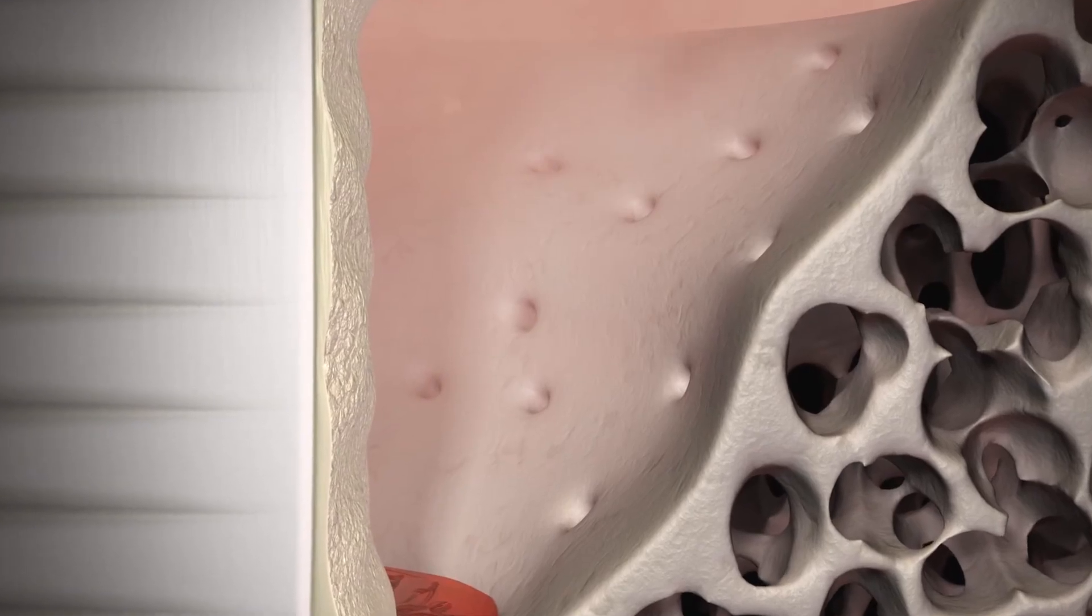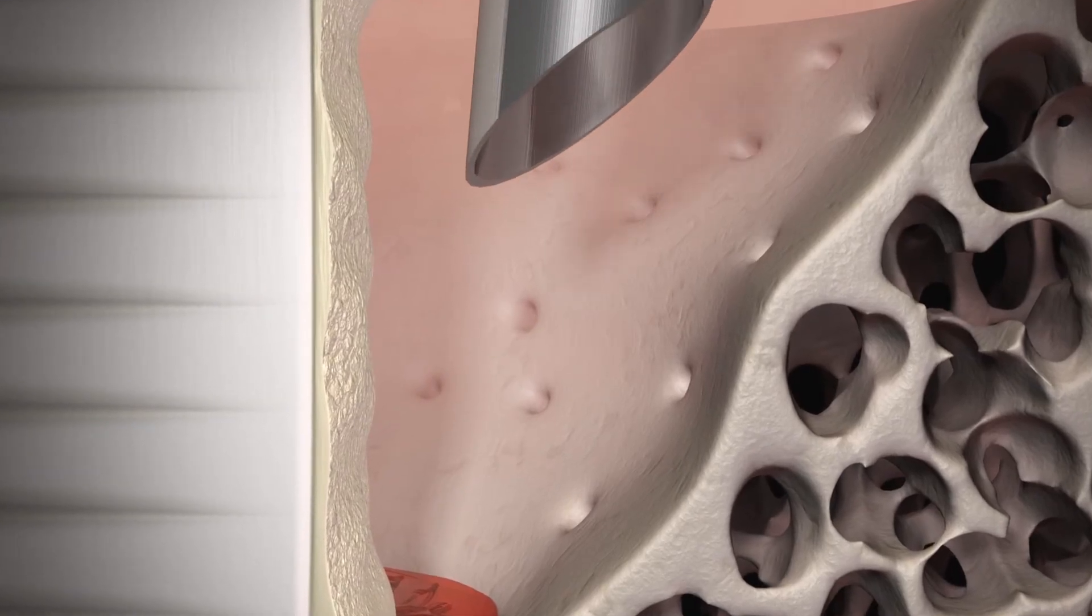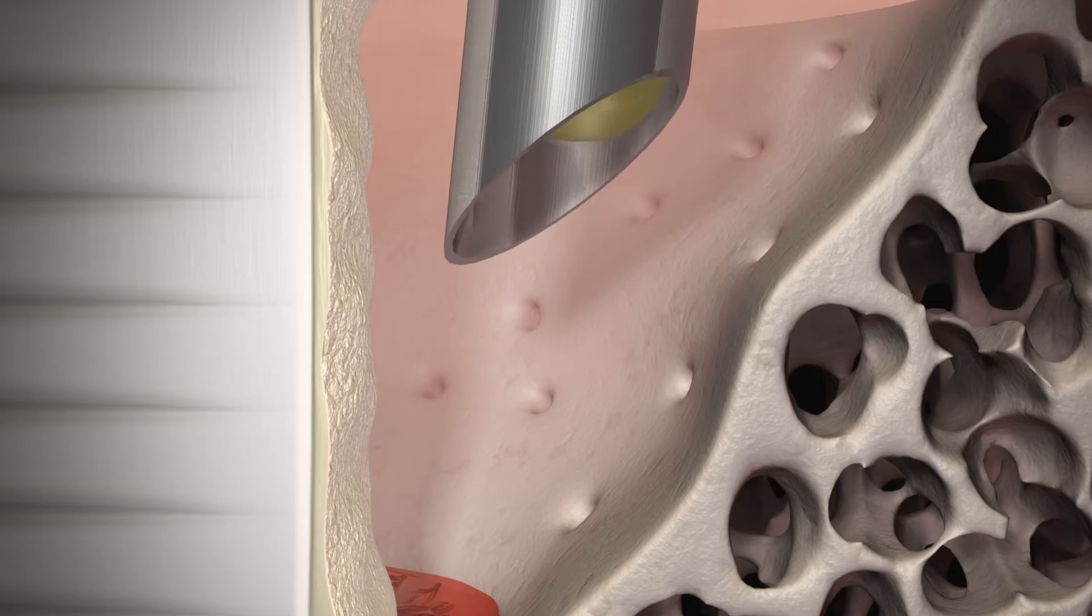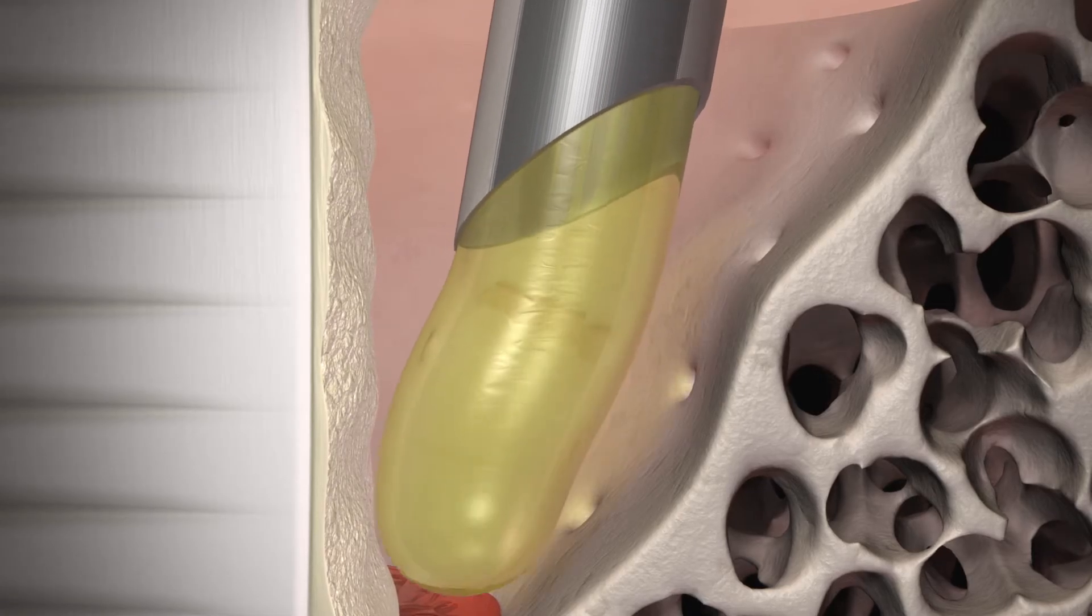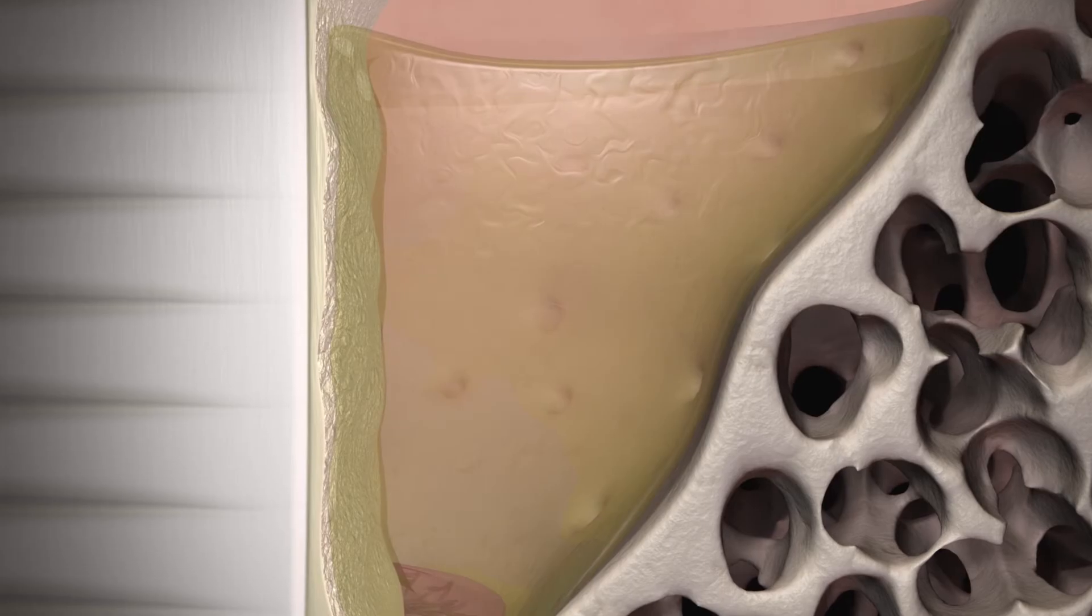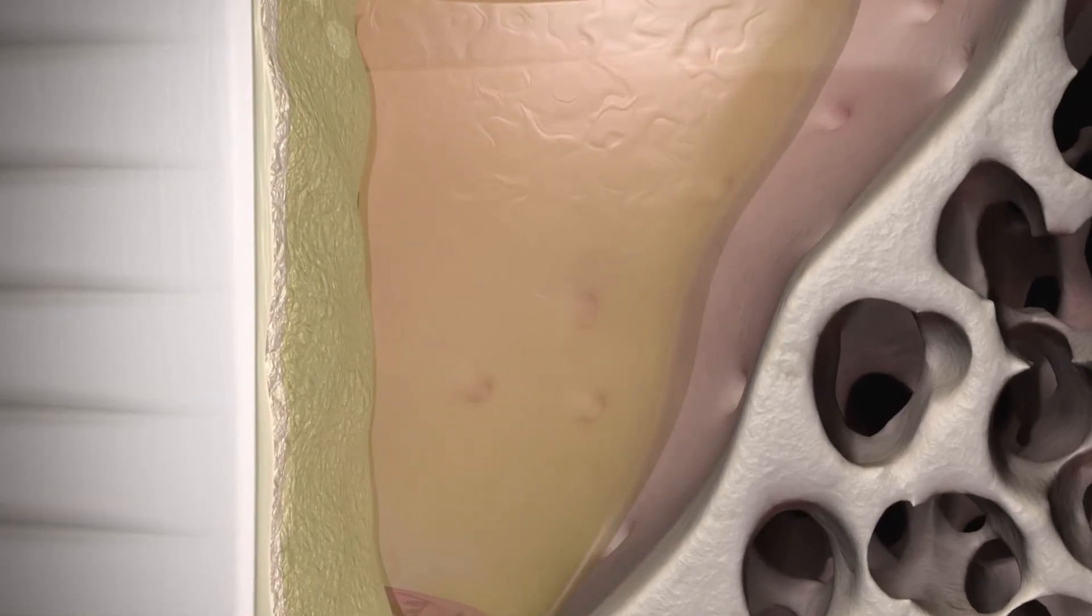After opening the flap and conditioning of the root surface with Straumann Prefgel, Straumann Emdogene is inserted in the periodontal defect and distributed evenly thanks to its gel-like consistency.